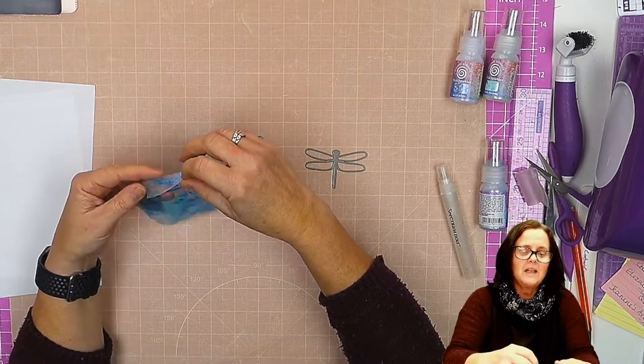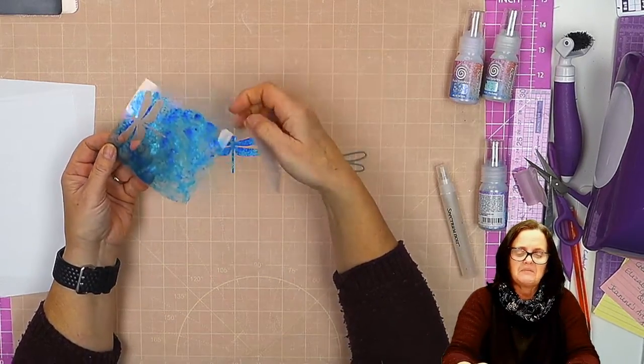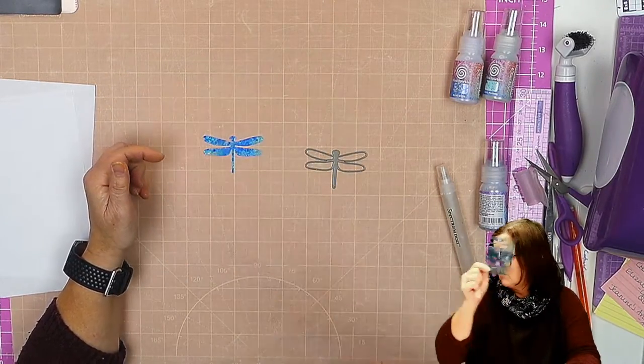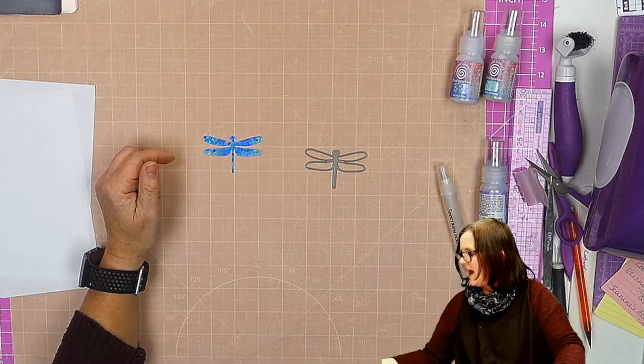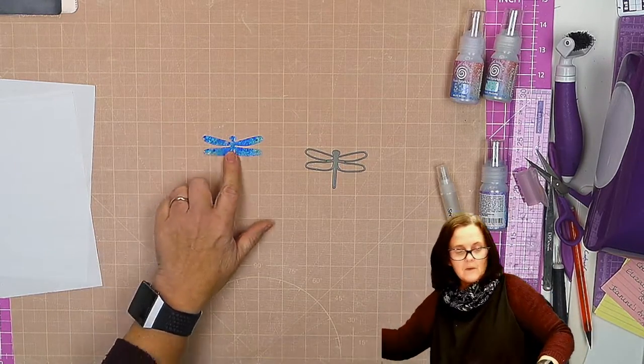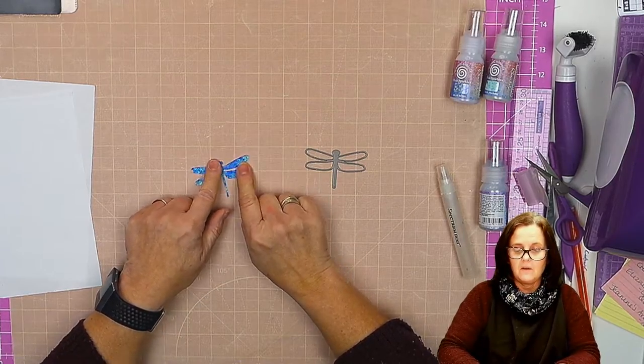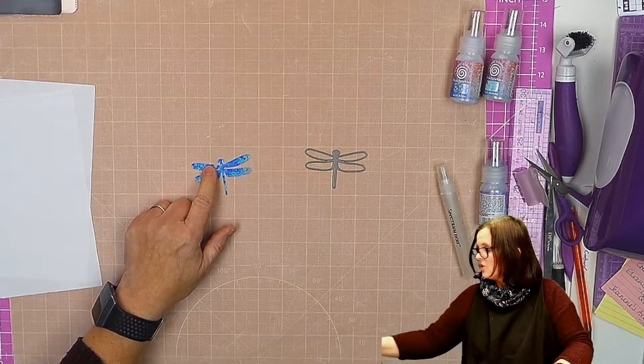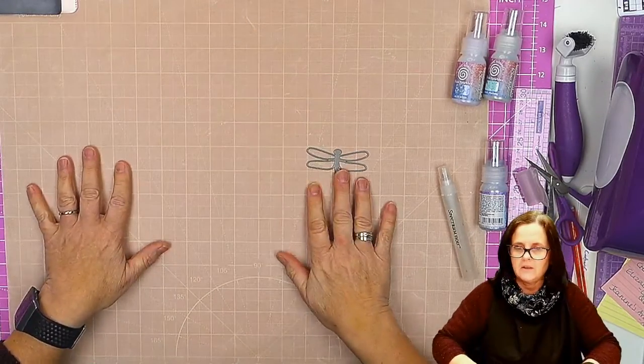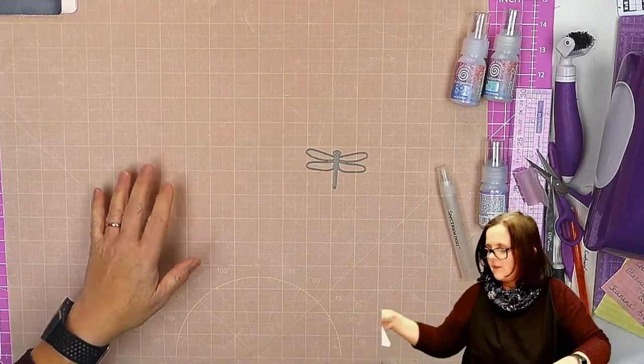So there we go. So we've cut that out. And from this one little piece, I could probably get another two of those out. So don't throw that away. So we have our little dragonfly here. So put that to one side, because we need to cut the other bits out that we're going to need for our card.